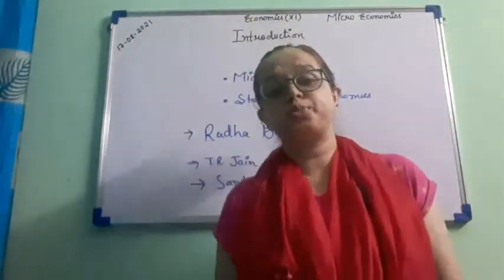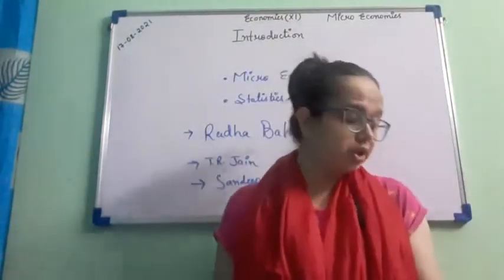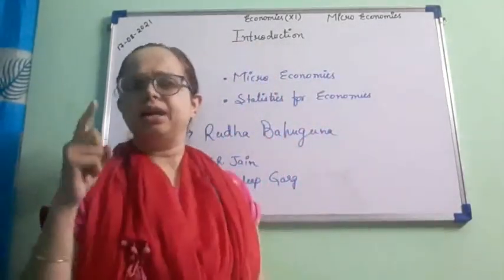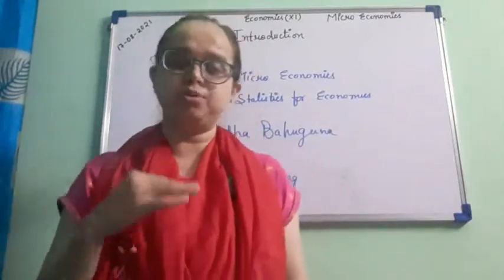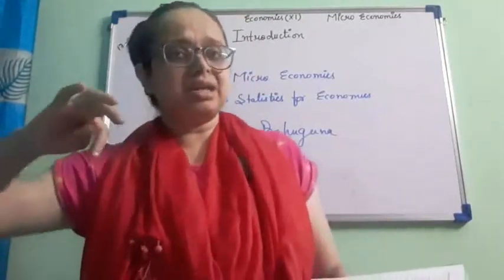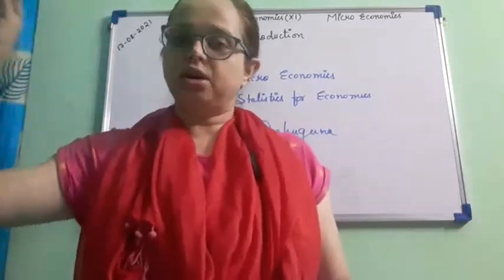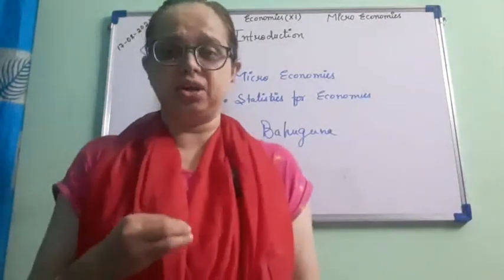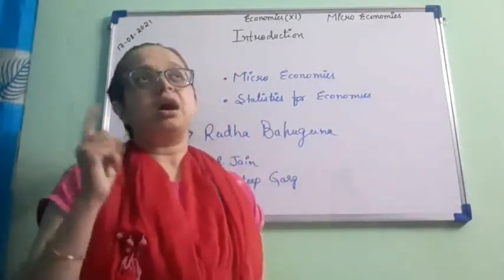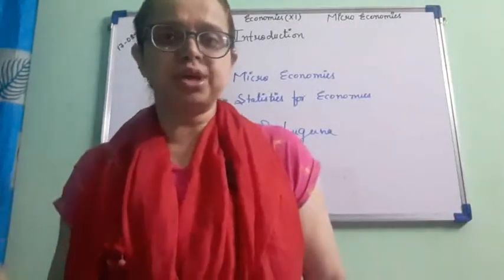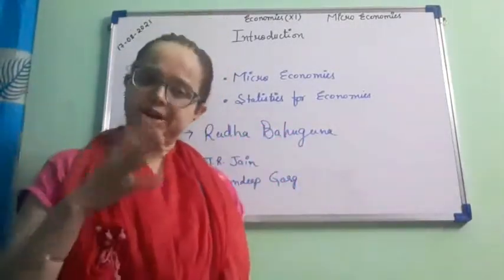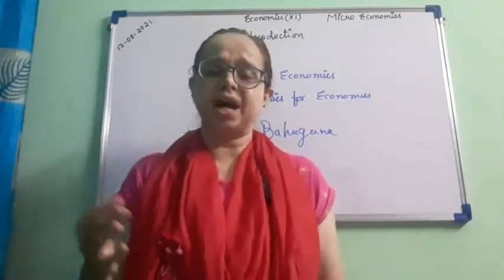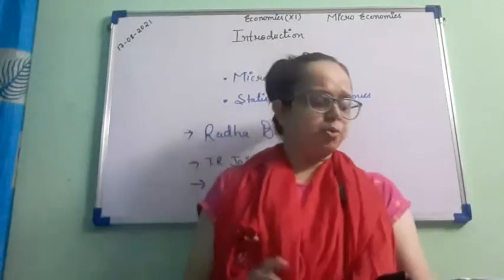Next is producer equilibrium in chapter 8. Just as in chapter 2 we discuss consumer equilibrium — where the consumer reaches the point of equilibrium and wants maximum satisfaction — in chapter 8 we discuss producer equilibrium, where the main motive of the producer is to earn maximum profit.